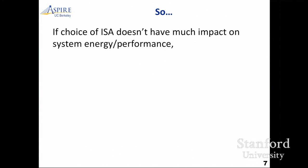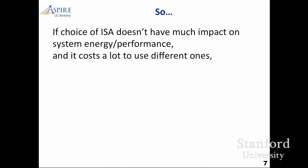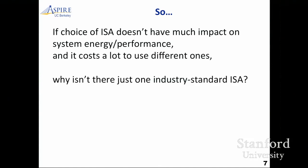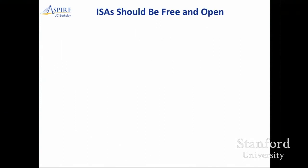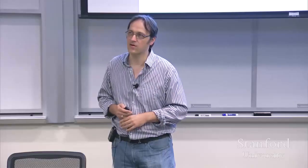Given that the choice of ISA doesn't have much impact on the end system's energy or performance, and it costs a lot to use different ones, why is there more than one? It makes no sense. The industry has more than one ISA. We say: no reason — there should be one ISA, it should be free and open, it should be a standard just like Ethernet, where you connect parts of the industry together: the hardware guys and the software guys.